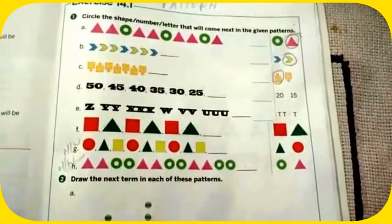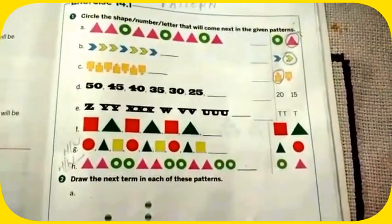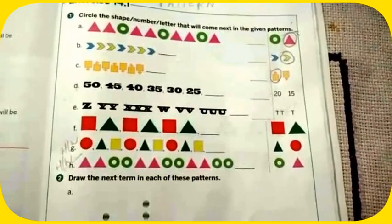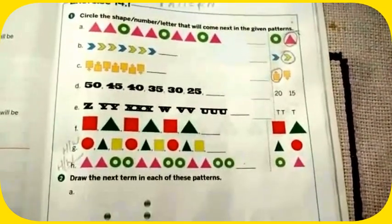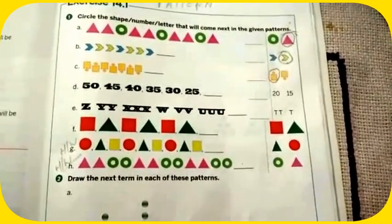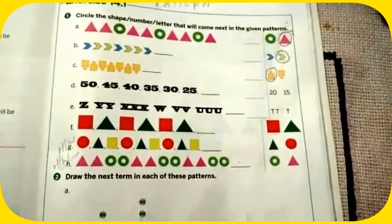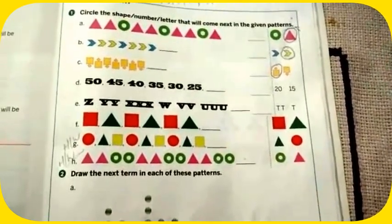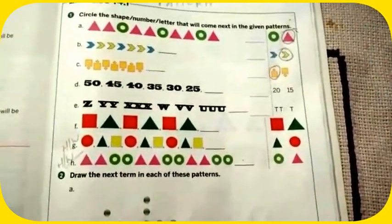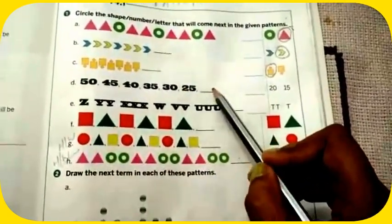Next, number d: 50, 45, 50 minus 5 is 45, then 40, 35, 30, then 25. So you are subtracting 5 to get this series. Also you can get it in the 5 table: 5×5=25, 5×6=30, 5×7=35. That means 25 we got by 5×5, so here will come 5×4=20. Give a circle mark here.